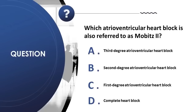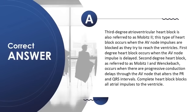Question 21: Which atrioventricular heart block is also referred to as Mobitz II? A) 3rd degree, B) 2nd degree, C) 1st degree, D) complete heart block. Correct answer is A. 3rd degree AV heart block is Mobitz II, occurring when AV node impulses are blocked reaching the ventricles. 1st degree block occurs when the impulse is delayed. 2nd degree, referred to as Mobitz I or Wenckebach, involves progressive conduction delays. Complete heart block blocks all atrial impulses to the ventricle.